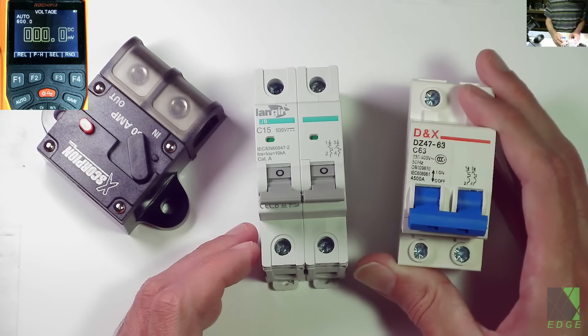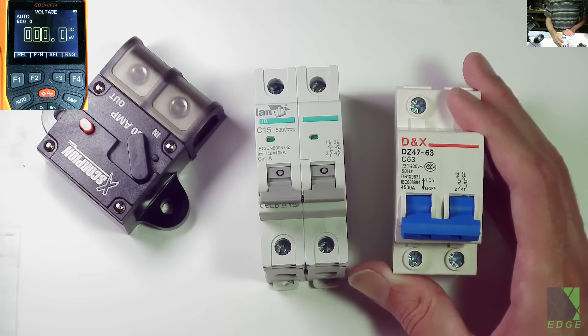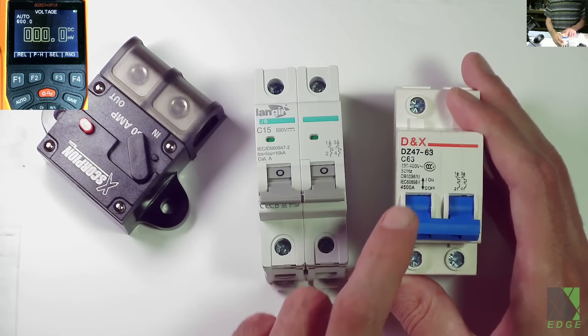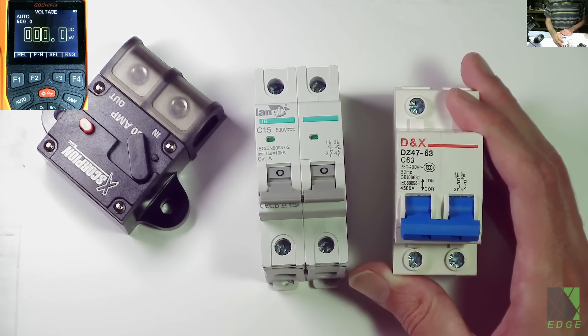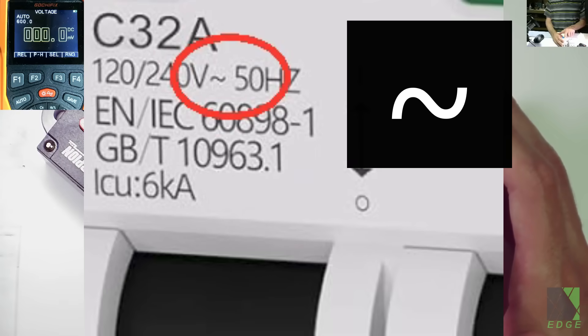The short answer is that you should use an AC breaker for AC. As you can see this circuit breaker is an AC breaker. Now I have seen breakers like this on certain online auction sites for sale as DC solar circuit breakers. Well this is an AC breaker as you can see by that little line right there which indicates AC.